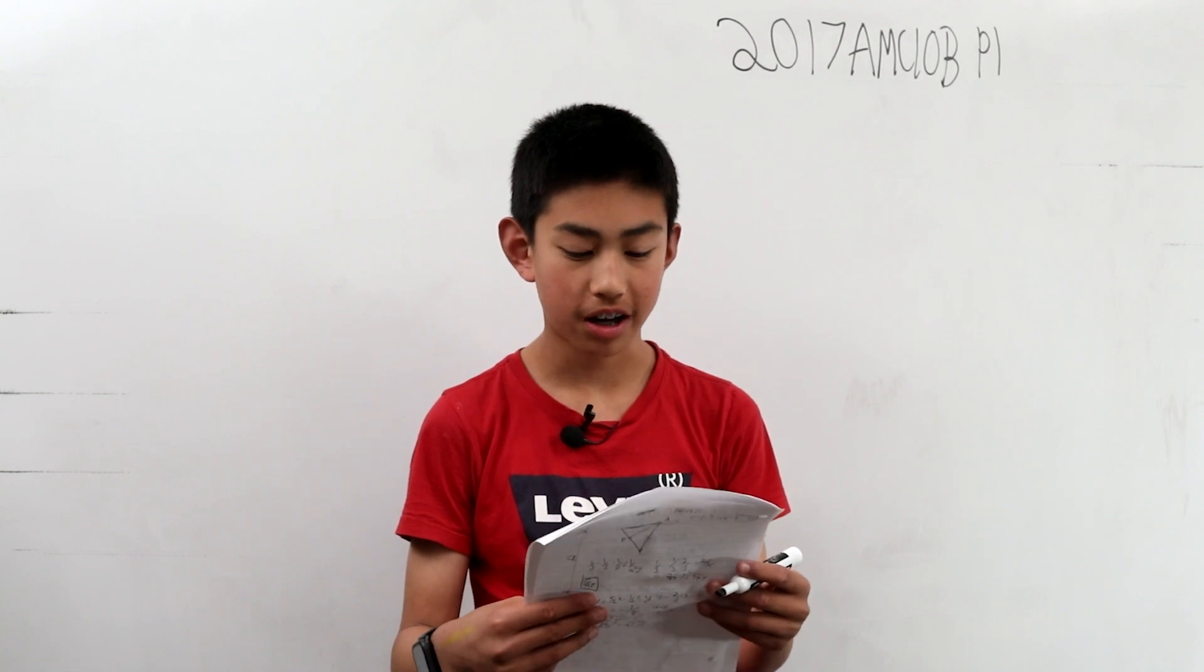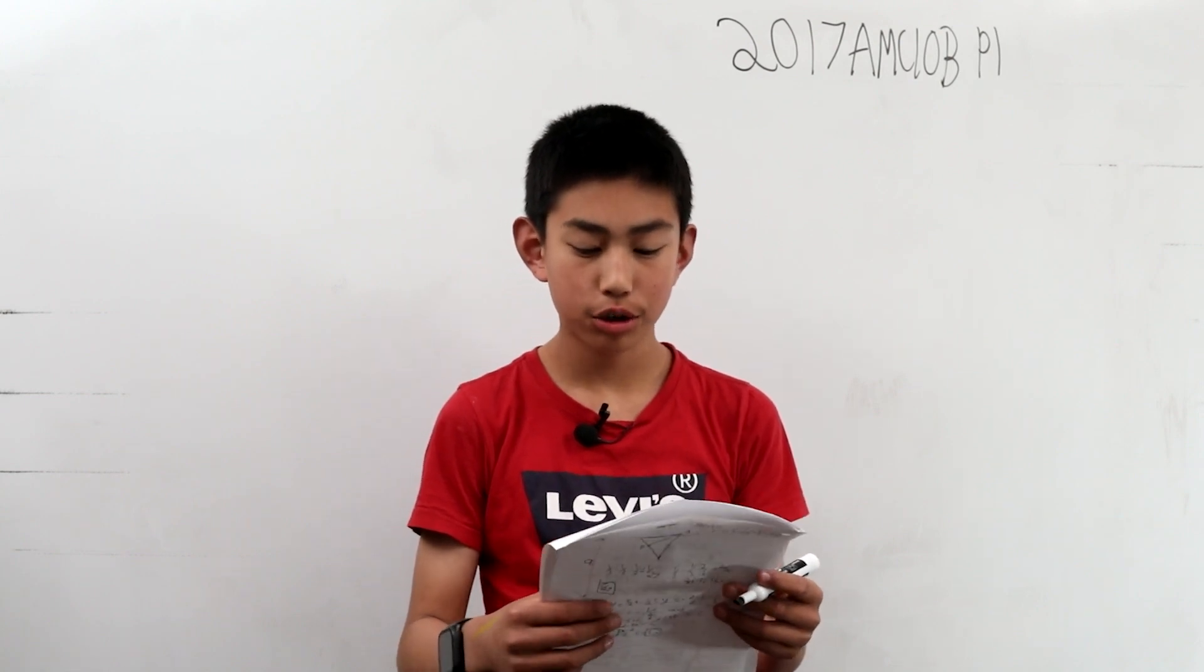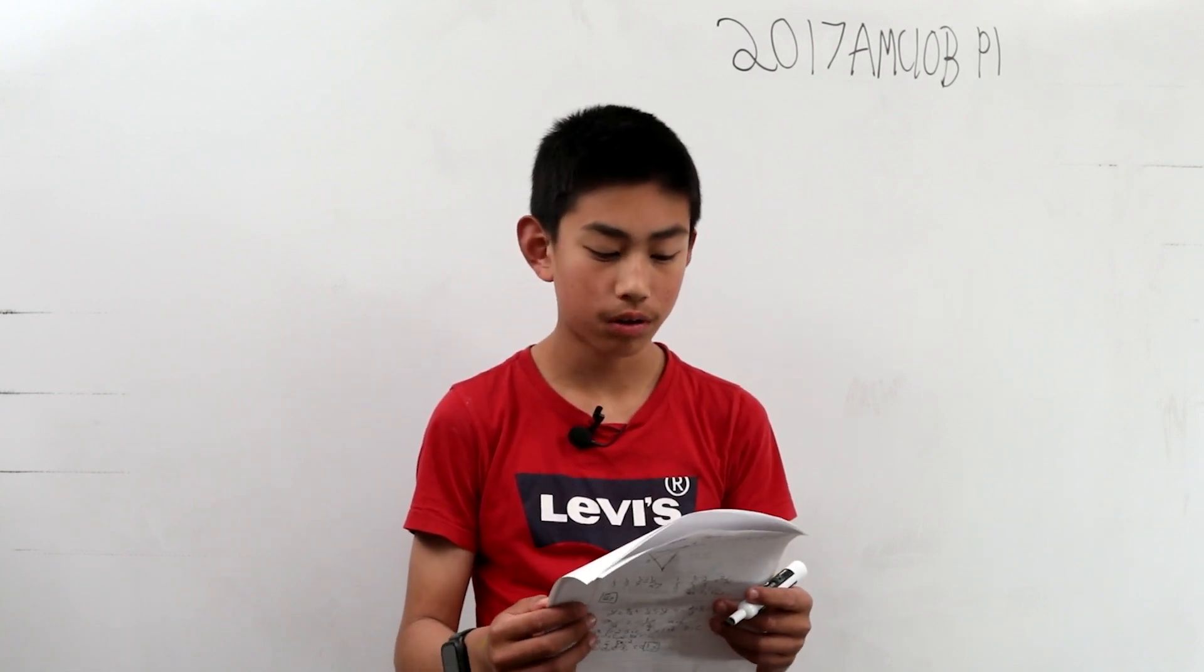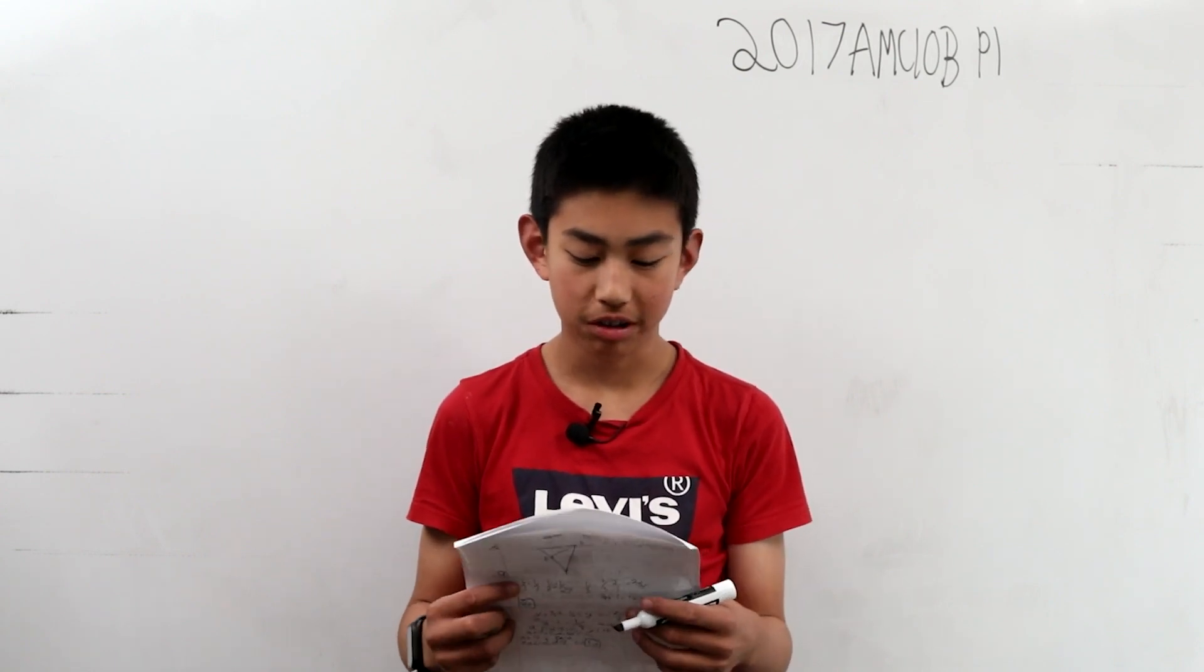Mary thought of a positive two-digit number. She multiplied it by three and added 11. Then she switched the digits of the result, obtaining a number between 71 and 75 inclusive. What was Mary's number?